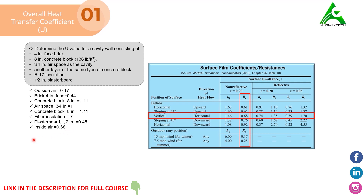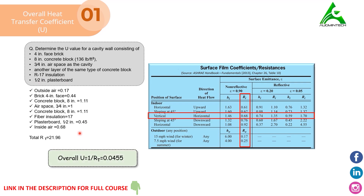These are the resistances of the individual components used in the construction of the wall. To get the total resistance, all values are added together. Then, using the formula U = 1 / total resistance, the value of U is finally found to be 0.0455. This is how we determine the value of U for a wall.